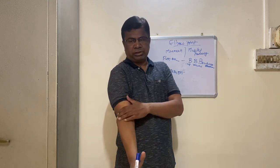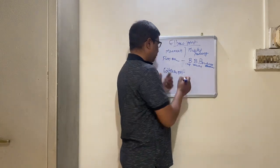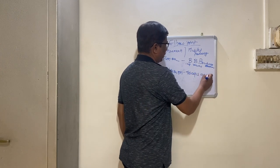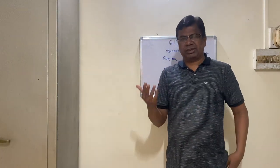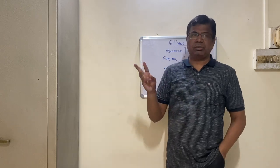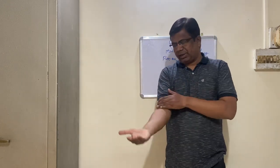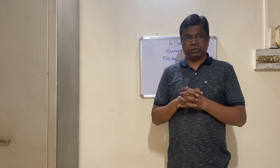Brachioradialis flexes the elbow in the mid-prone position — that is very important. Biceps and brachialis flex the elbow in the straight position. Extension is produced by two muscles: triceps and anconeus.